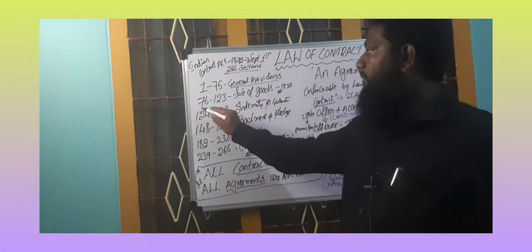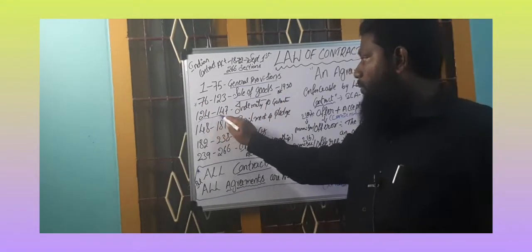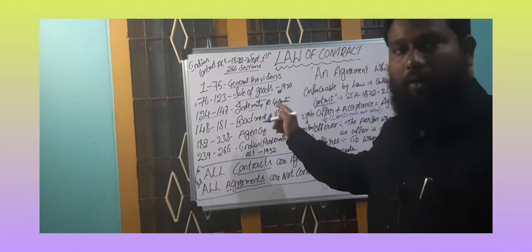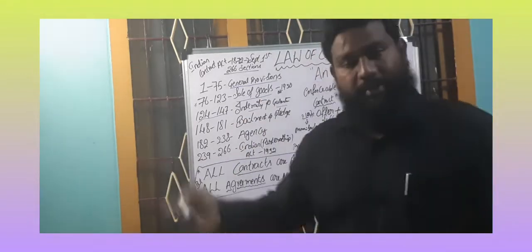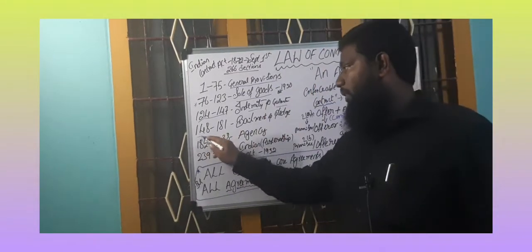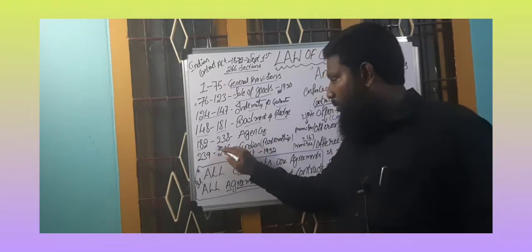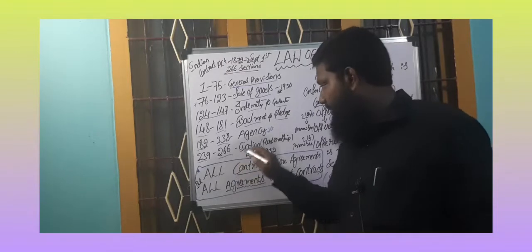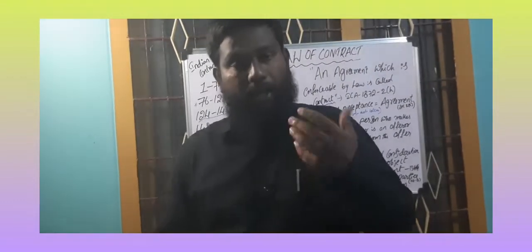Section 76 to 123 deals with sale of goods contracts. Section 148 to 181 deals with bailment and pledge. Section 182 to 238 deals with agencies. Section 239 to 266 deals with partnership. All these 266 sections were enacted in the presence of the British government.